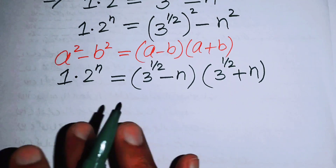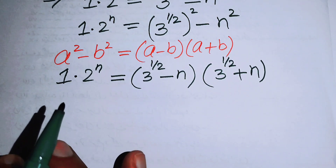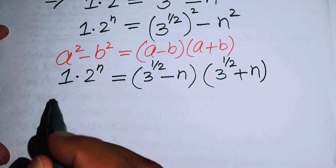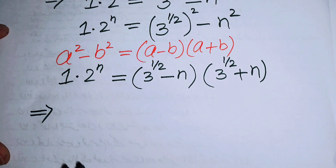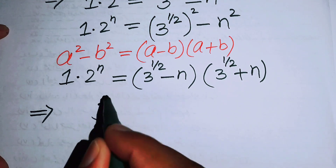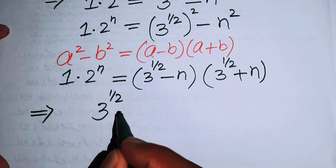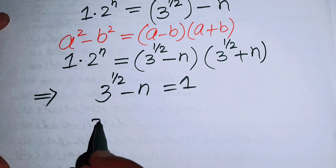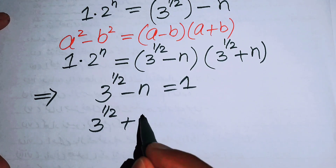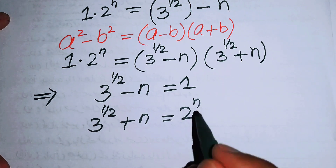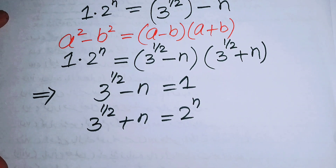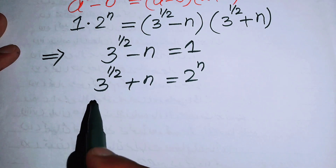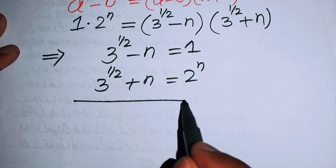Notice that we have 2 factors on the left-hand side and 2 factors on the right-hand side. By comparing both sides, we get: 3 to the power of 1 over 2 minus n equals 1, and 3 to the power of 1 over 2 plus n equals 2 to the power of n.